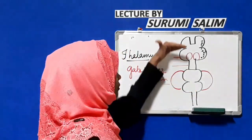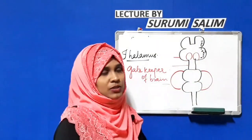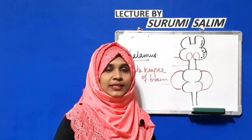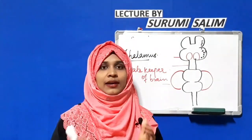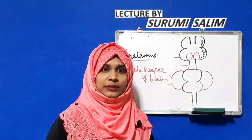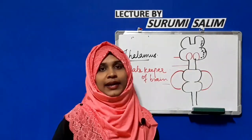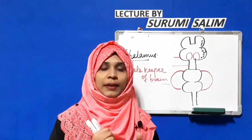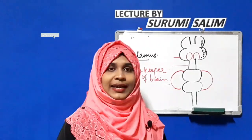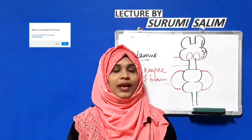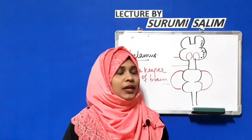To summarize the forebrain: we discussed the cerebral hemispheres united by the corpus callosum, cerebral cortex with gray and white matter, the four lobes (frontal, parietal, temporal, occipital), the limbic system, and the diencephalon. Next is the midbrain, otherwise called the mesencephalon. It consists of the tectum and tegmentum, and its major function is motor coordination.